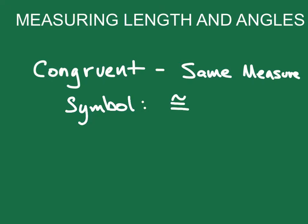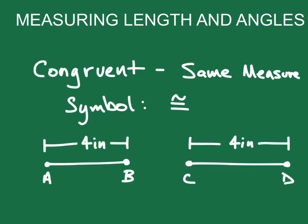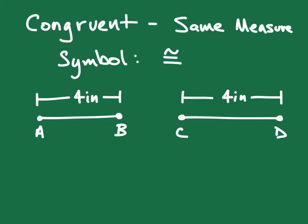Let's look at an example of two things that are congruent. Let's say that I have two line segments: line segment AB and line segment CD. Line segment AB has a length of four inches and so does the length of CD. So the conclusion we could draw is that line segment AB is congruent to line segment CD. We can also use tick marks to show that these two segments are congruent, without needing to know the actual number.